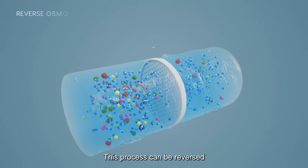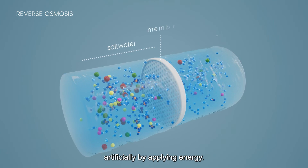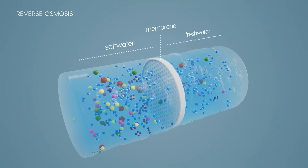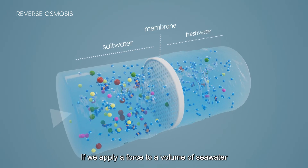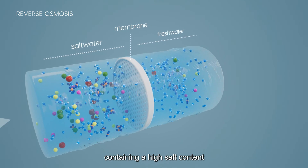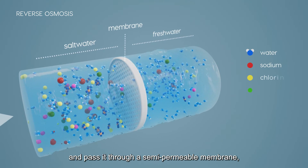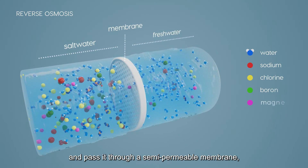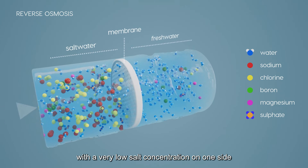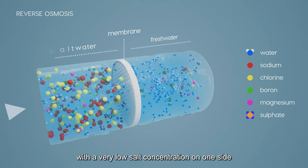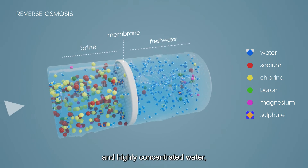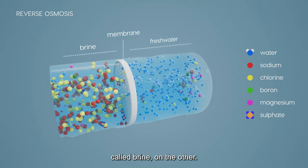This process can be reversed artificially by applying energy. If we apply a force to a volume of seawater containing a high salt content and pass it through a semi-permeable membrane, we obtain water with a very low salt concentration on one side and highly concentrated water called brine on the other.